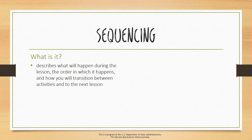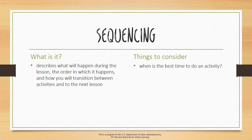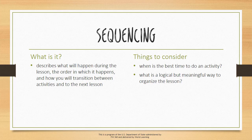Sequencing describes what will happen during the lesson, the order in which it happens, and how you will transition between activities and to the next lesson. Considerations for sequencing could include when is the best time to do a certain activity, and what is a logical but meaningful way to organize the lesson. The sequencing of a lesson should support the lesson's learning objectives.